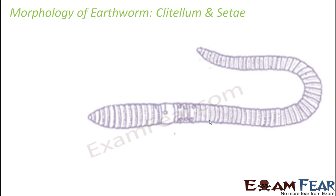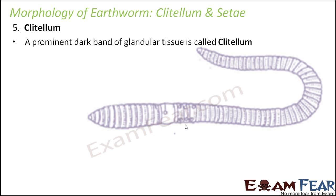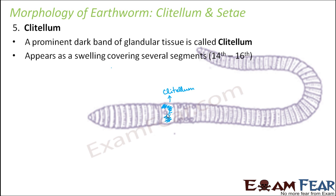The next topic is the clitellum and setae. The clitellum is a prominent dark band of glandular tissue present in the body of the earthworm. It is a dark colored glandular tissue which appears as a swelling covering several segments — the 14th to 16th segments. That is why the thickness of this band is quite bigger compared to other segments, because it includes three segments: 14th to 16th.